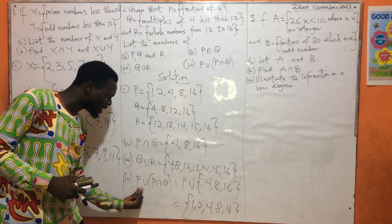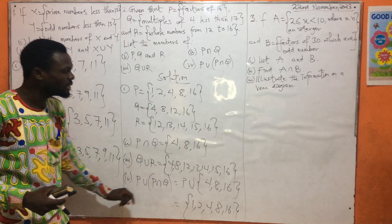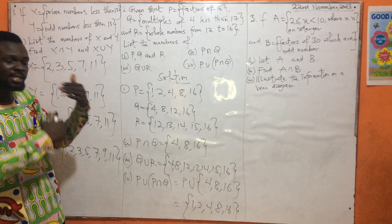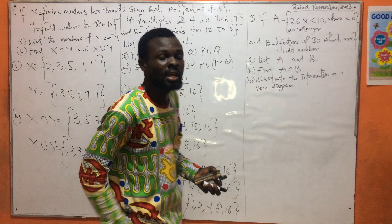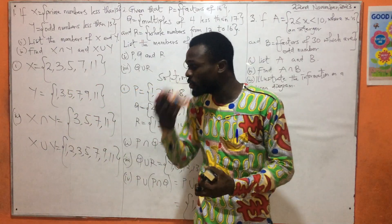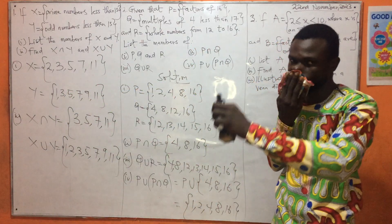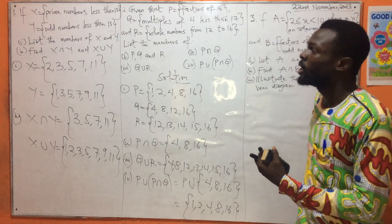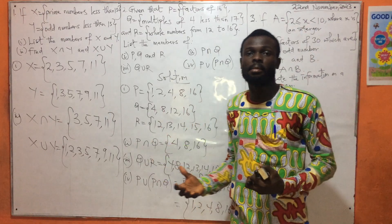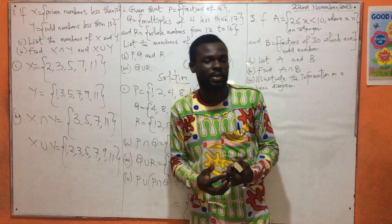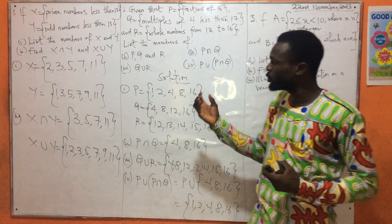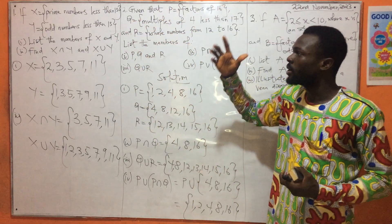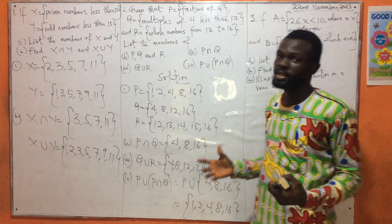These questions are very simple when it comes to union and intersection. All you need to do is know what you have to list — whether whole numbers, integers, odd numbers, prime numbers, even numbers, composites, or factors of a number. That helps you to know the relationship that exists among these rational numbers in terms of union and intersection.